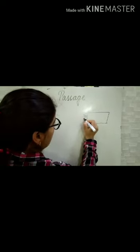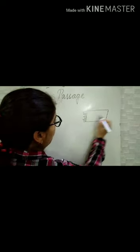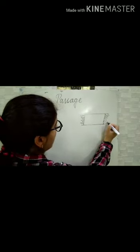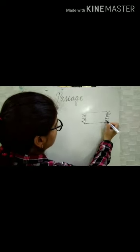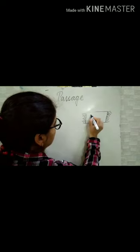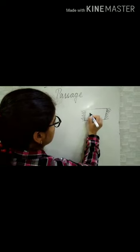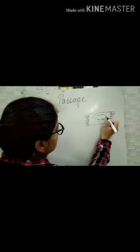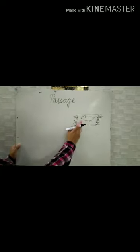I am making a picture. What is this? This is a mat. And here is a rat. A rat is on the mat.